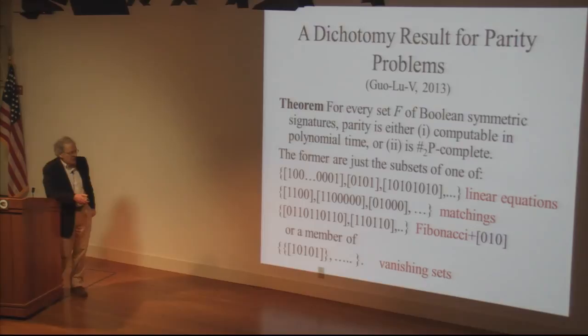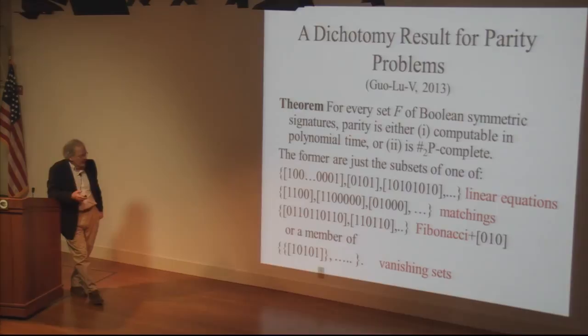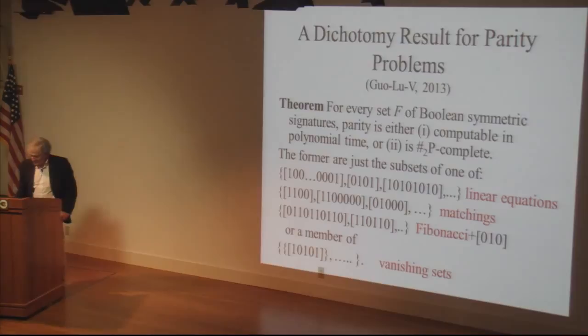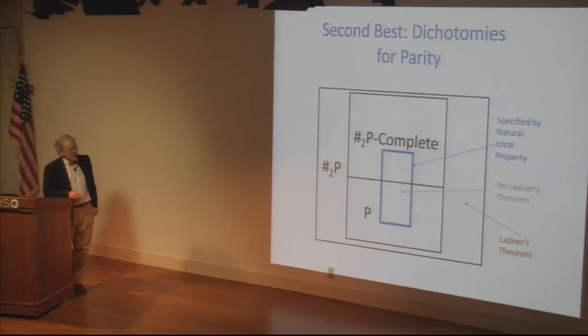One of the achievements of people working in counting complexity theory are these very strong dichotomy theorems, which for quite impressive clusters of problems really resolve that either these problems collapse to one or at most two categories — the easy ones (polynomial time) and the hard ones (all equivalent). That's some notion of progress.